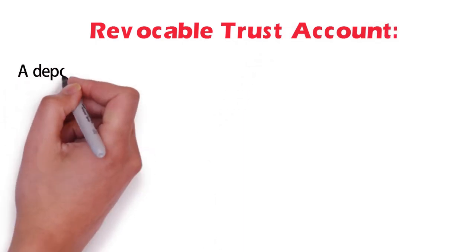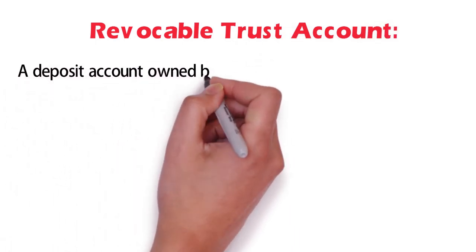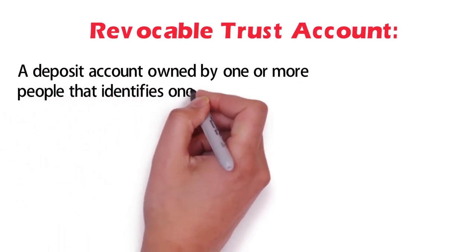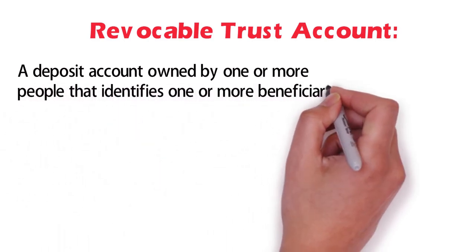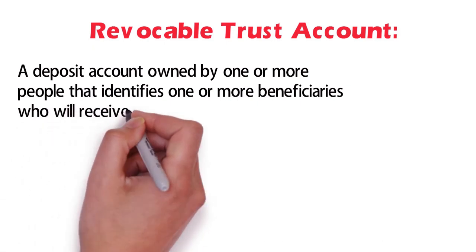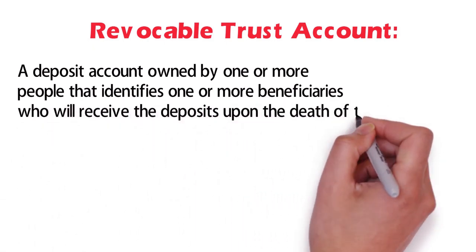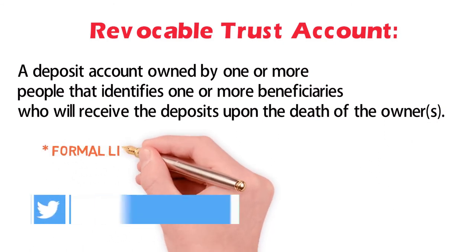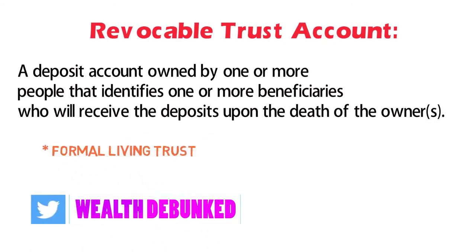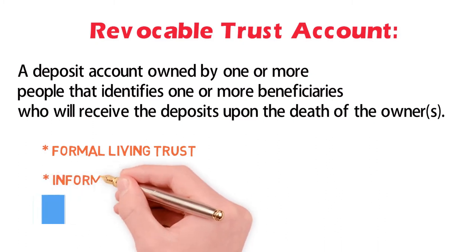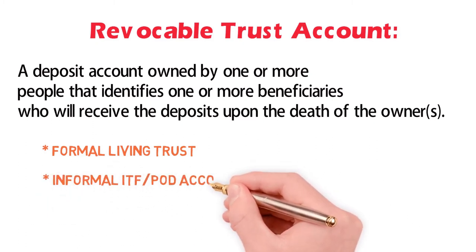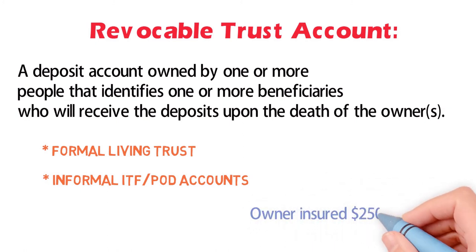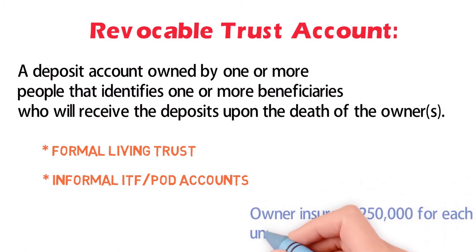A revocable trust account is a deposit account owned by one or more people that identifies one or more beneficiaries who will receive the deposits upon the death of the owners. This includes both formal living trusts and informal ITF/POD accounts. The coverage limit is $250,000 for each unique beneficiary designated.